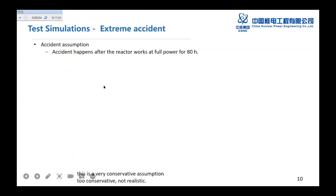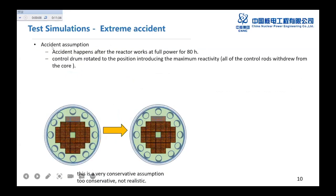Now I want to, I will give an introduction about the test simulation. First is the accident, extreme accident. This accident, the assumption is that it happens after the reactor works at full power for 18 hours. And at this time, we assume that all the control drums rotated to the most dangerous position, introducing the maximum reactivity. Or you can think all the control drums withdraw from the core. It should be mentioned that this is a very conservative assumption. Not realistic, just for a test calculation.